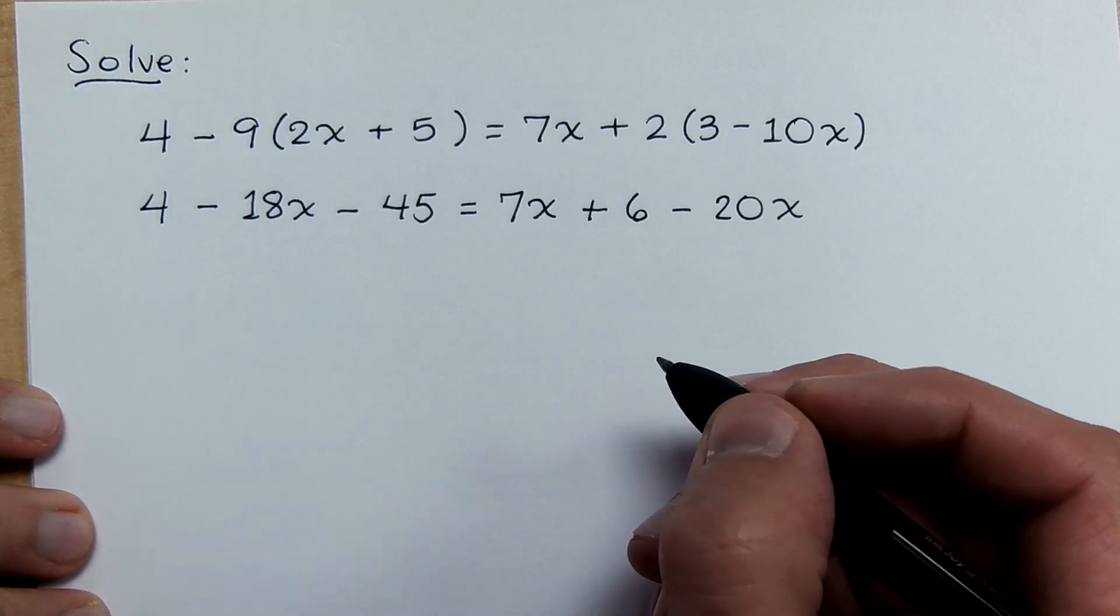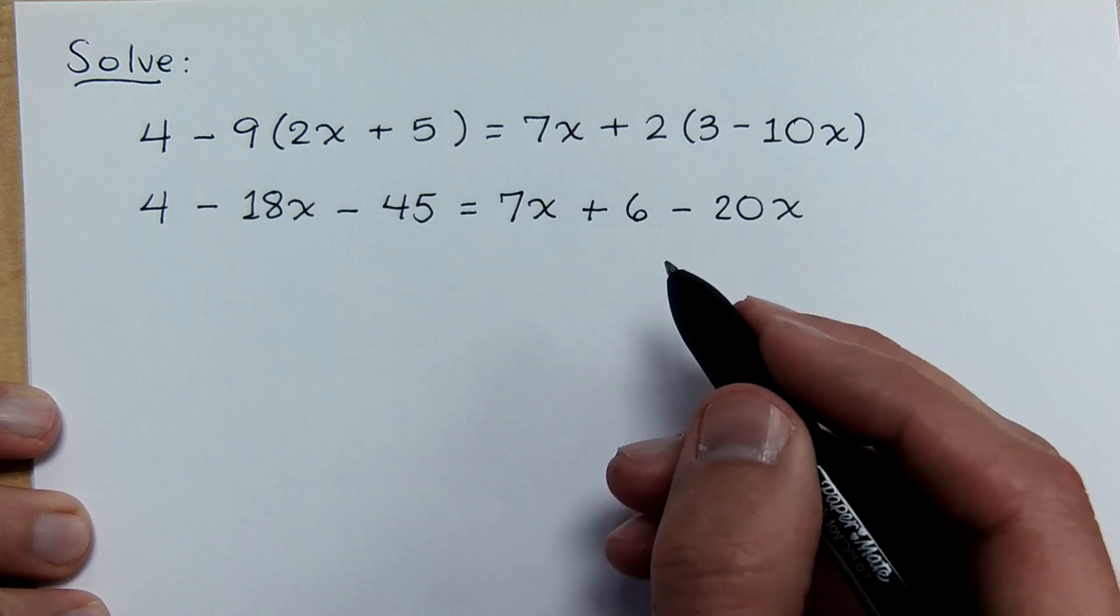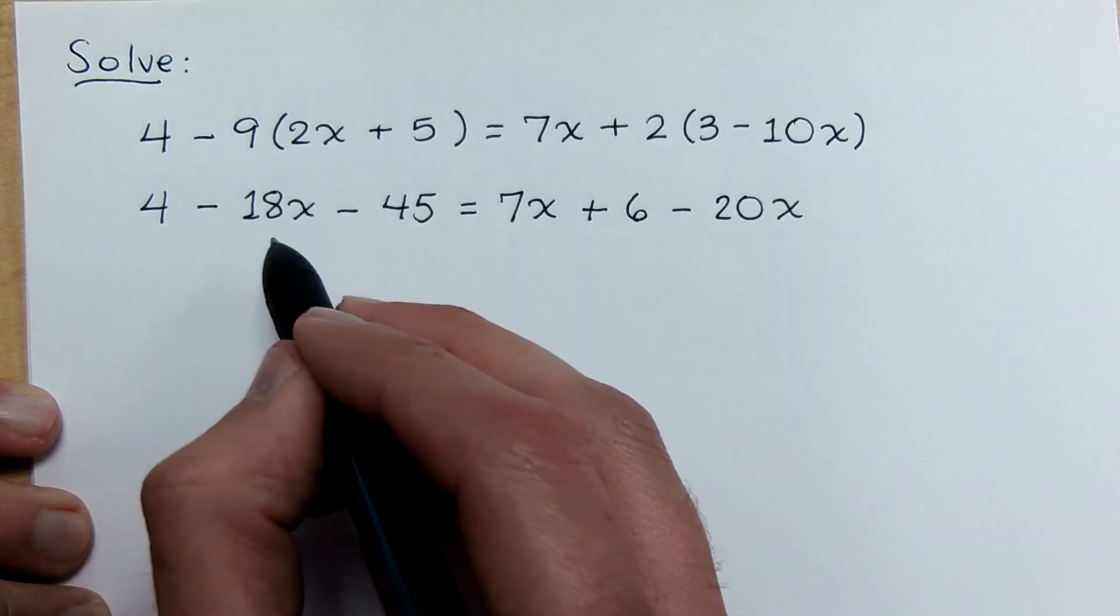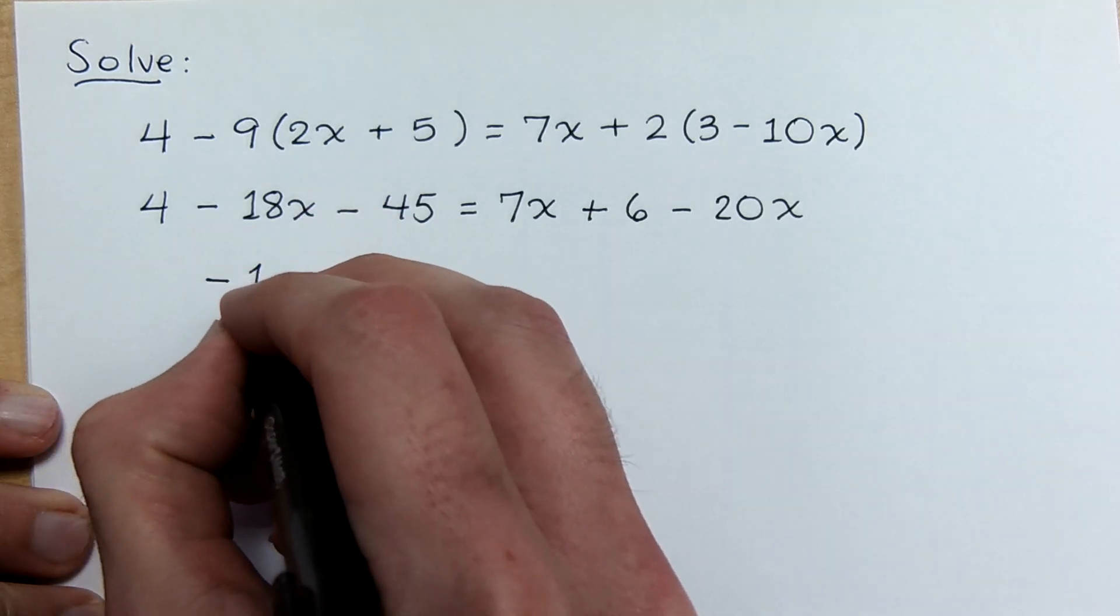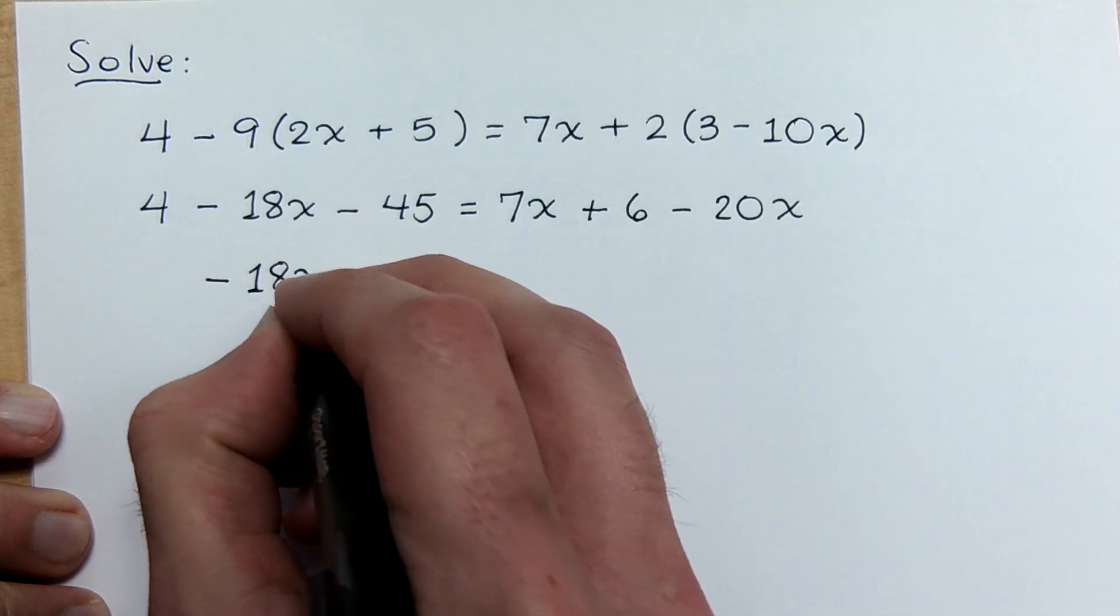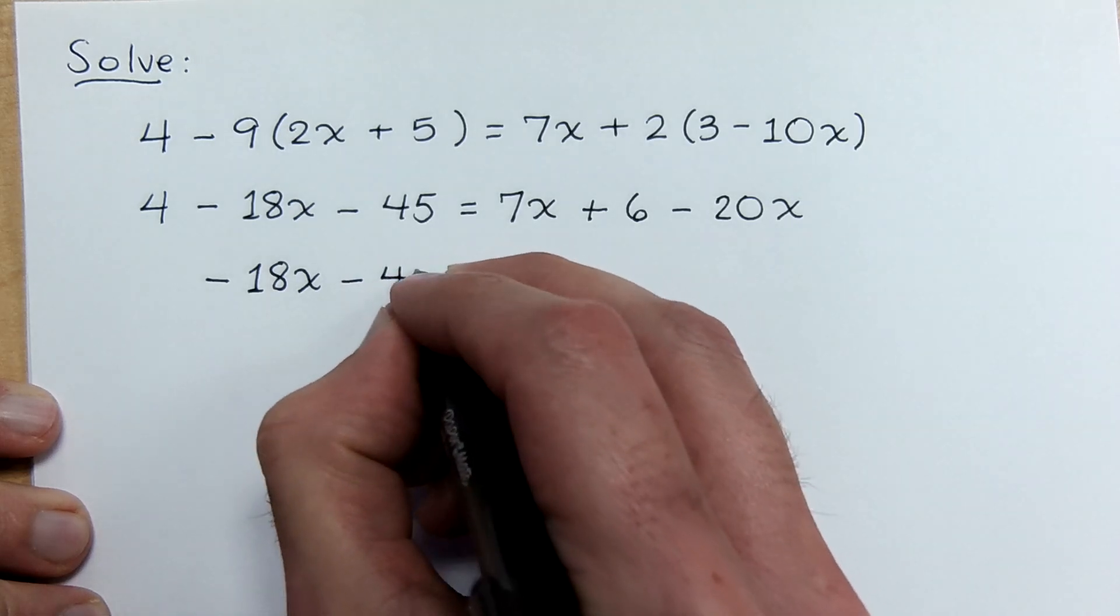And on the left side, what do you get? No, the left side is this one right here. Good. So you only have negative 18x, and 4 minus 45 is minus 41.